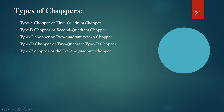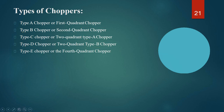Based on quadrant of operation, the classifications are: Type A chopper (first quadrant), Type B chopper (second quadrant), Type C chopper (two-quadrant type A), Type D chopper (two-quadrant type B), and Type E chopper (four-quadrant operation). In the next lecture, we will deal with these five classes of chopper.